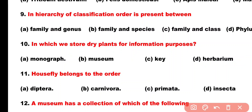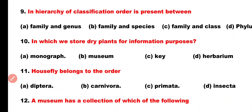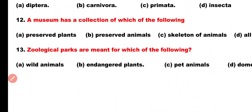Question number 11. House fly belongs to the order: Option A: Diptera, Option B: Carnivora, Option C: Primata, Option D: Insecta. Correct answer is Option A. House fly belongs to order Diptera.